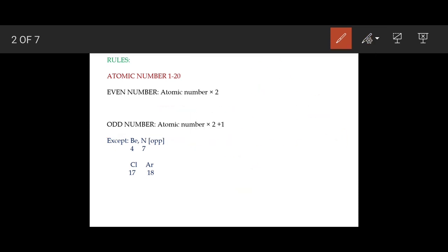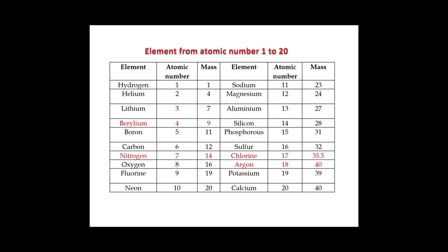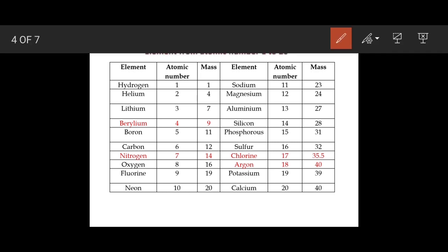Beryllium, nitrogen, chlorine, and argon do not follow this rule — these elements are exceptional. Hydrogen is also an exceptional element. Helium: atomic number 2, mass number 4 — multiply by 2 to get 4. Lithium: atomic number 3 — it is odd, so multiply by 2 then add 1, giving mass number 7. Boron: atomic number 5 — it is odd, so multiply by 2 then add 1, giving mass number 11.